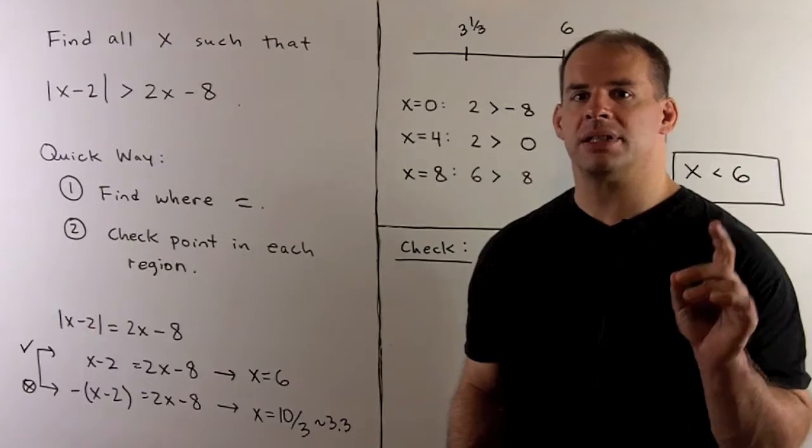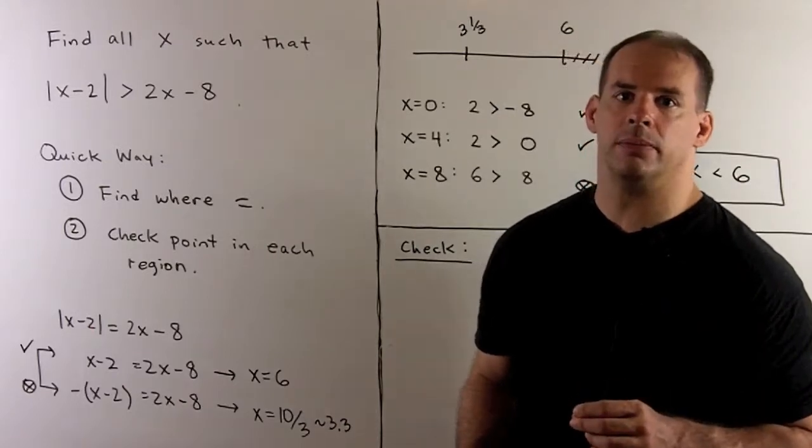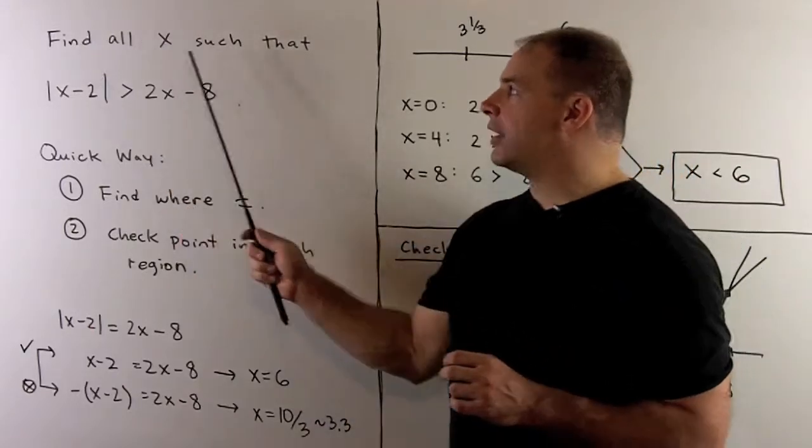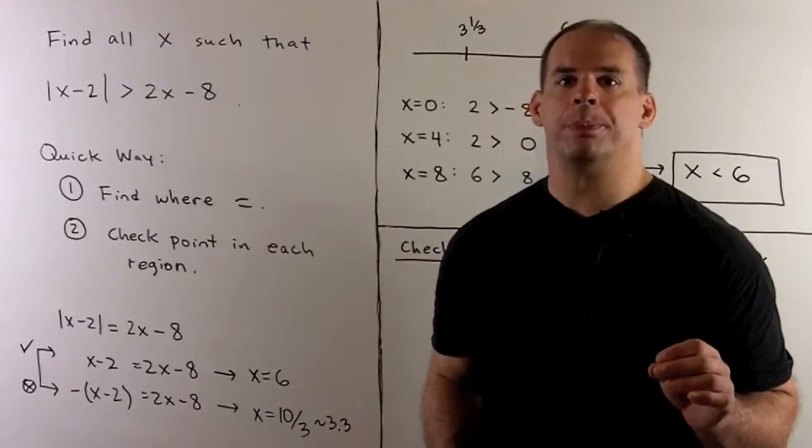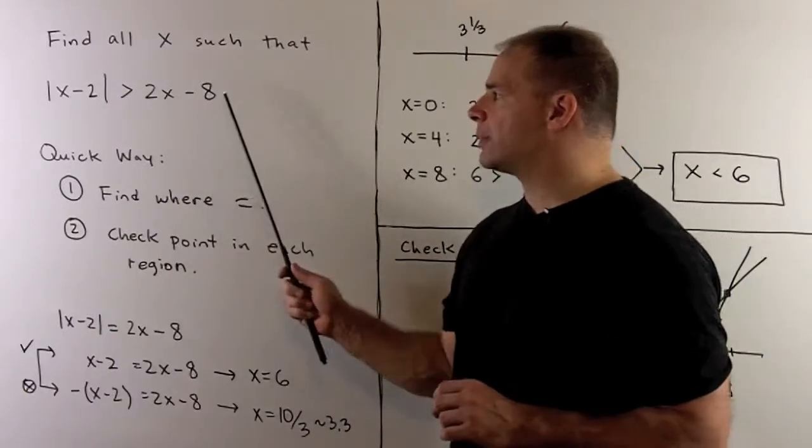Here's an application of continuity to solve inequalities. I want to find all x such that the absolute value of x minus 2 is greater than 2x minus 8.